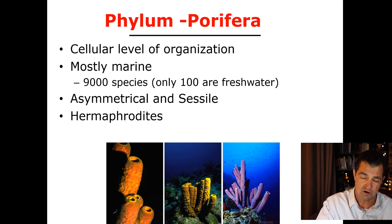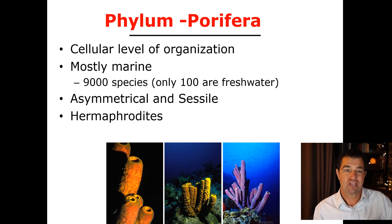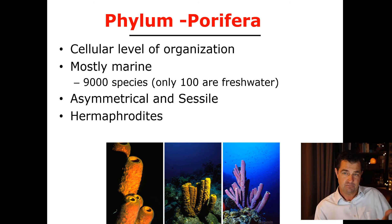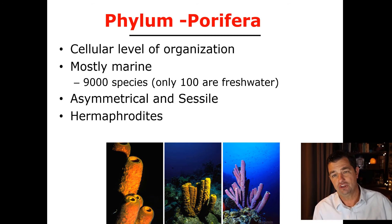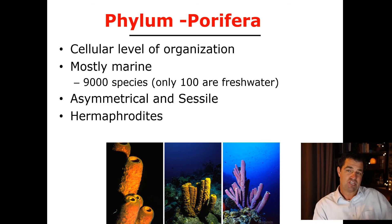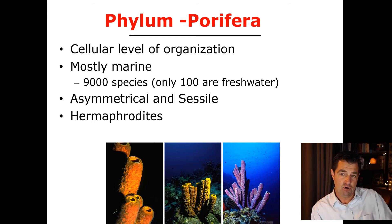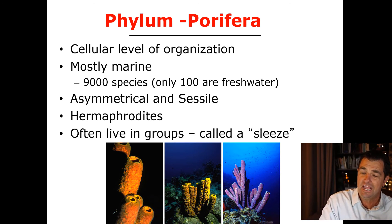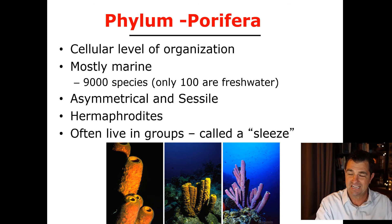Porifera are also hermaphrodites, meaning they have both functioning male and female parts. A true hermaphrodite actually has both functioning male and female parts — this can't really happen in humans because the parts that develop into male or female do so under different hormonal controls. Sponges, however, can produce both sperm and eggs in the same individual. A group of sponges is called a sleaze.